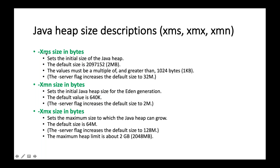Now, what is the default size for XMS and XMX in bytes? XMS sets the initial size of the Java heap. The XMS default size is 2 MB — if you don't declare anything, Java will automatically start with 2 MB of XMS size. The value must be a multiple of and greater than 1024 bytes, i.e., greater than 1 kilobyte. It can increase the default size up to 32 MB.